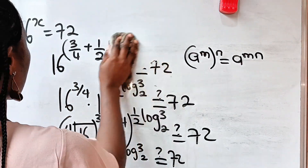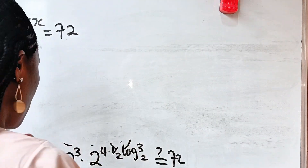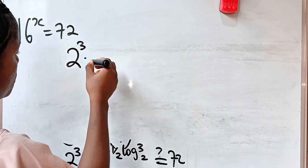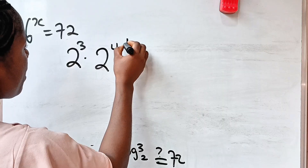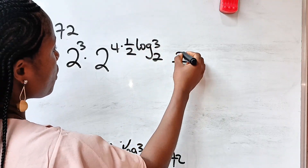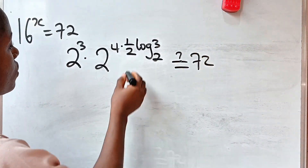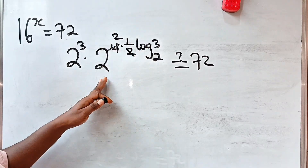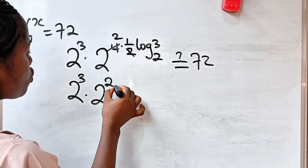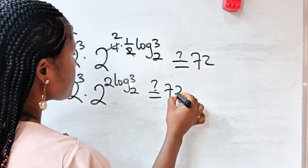So we have 2 to the power of 3 multiplied by 2 to the power of 4, raised to the power of one half log 3 base 2. Remember that when you have a to the power of m raised to the power of n, that equals a to the power of m multiplied by n. So this becomes 2 to the power of 4 multiplied by one half log 3 base 2. The 2 and the 4 simplify: 4 times one half gives 2, so we have 2 to the power of 3 multiplied by 2 to the power of 2 log 3 base 2.